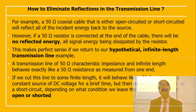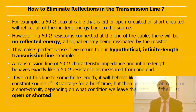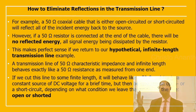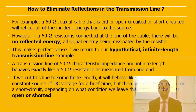For example, a 50-ohm coaxial cable that is either open-circuited or short-circuited will reflect all of the incident energy back to the source. However, if a 50-ohm resistor is connected to the end of the cable, there will be no reflected energy — all of the signal energy is dissipated by the resistor.